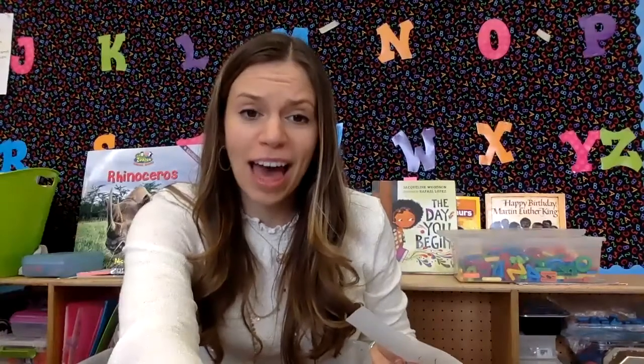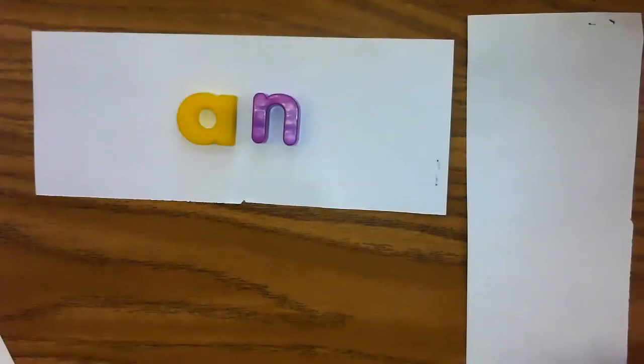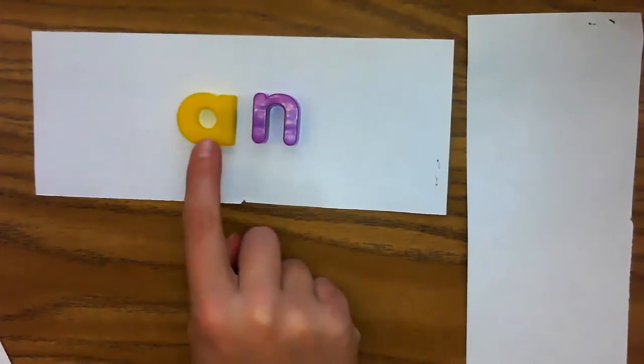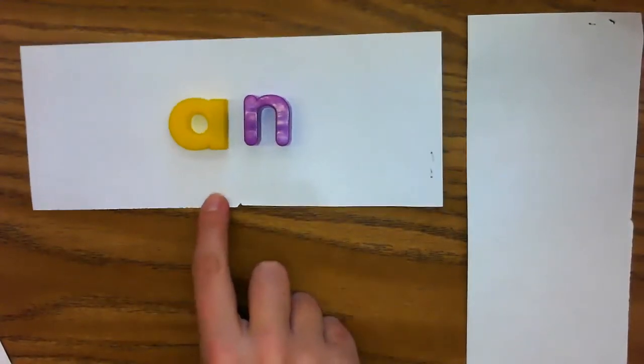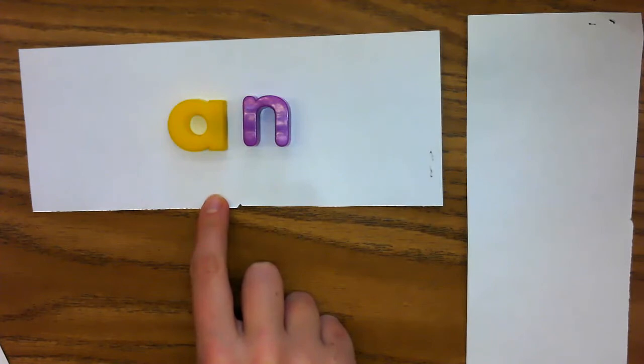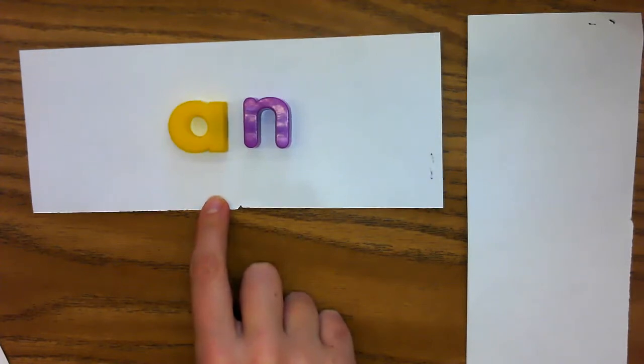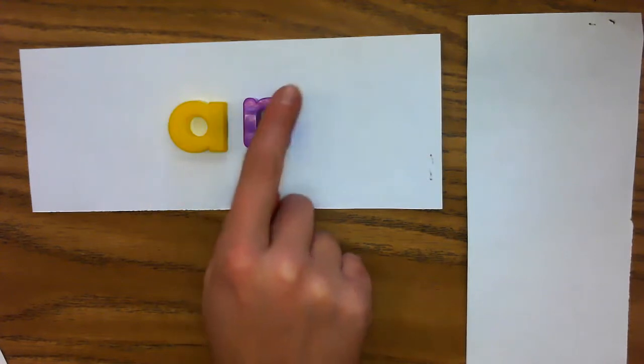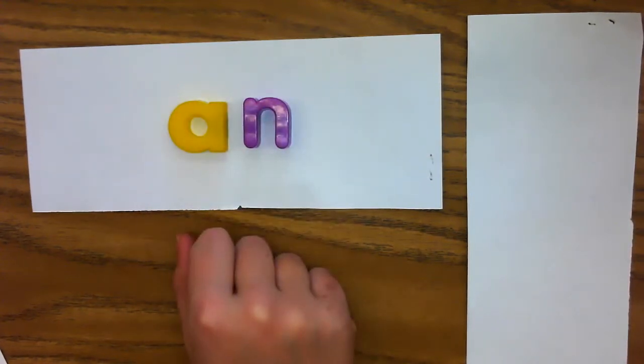Well, today we're going to do that with a different word part. Ready? This word part is an. It's also a sight word. An is a word all by itself, but we can also see the an word part in other words.